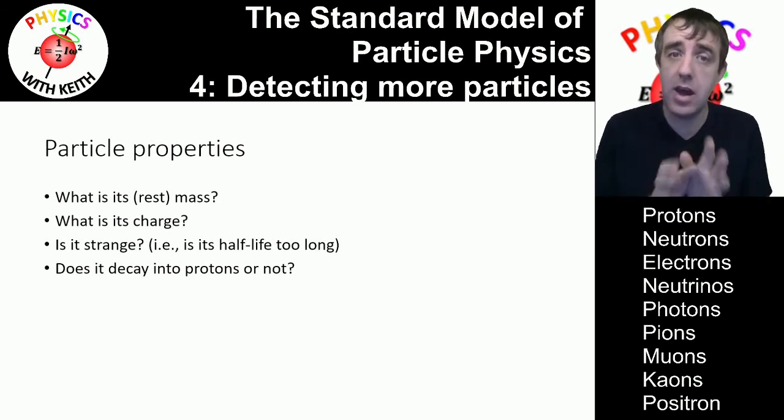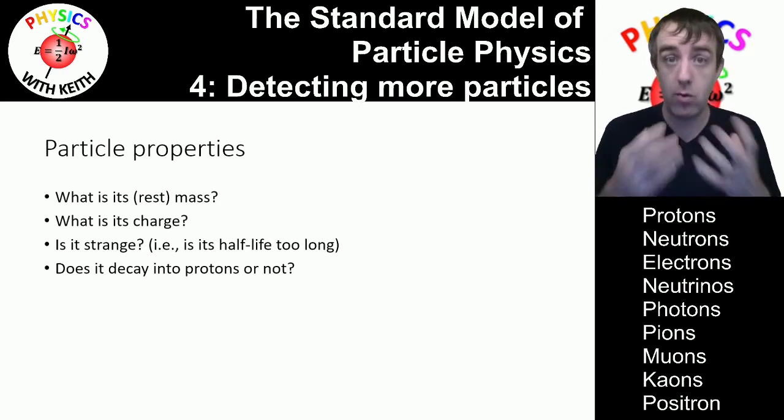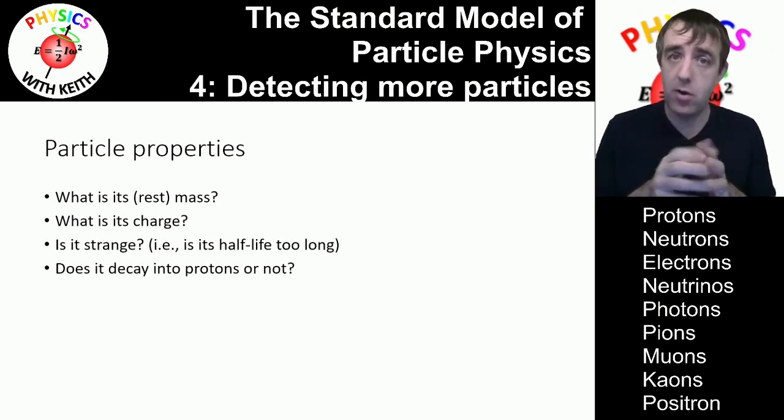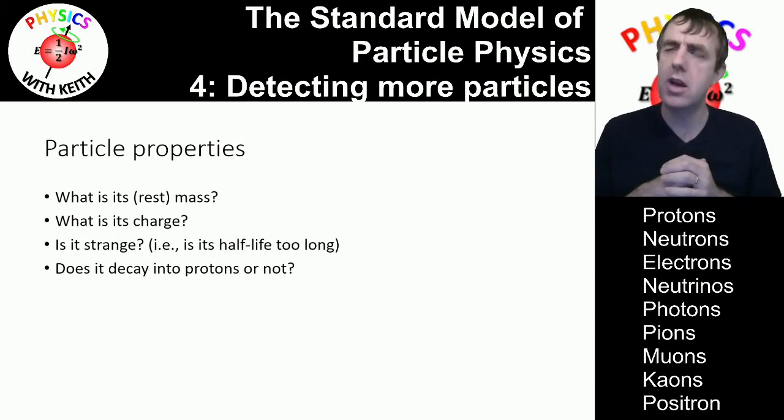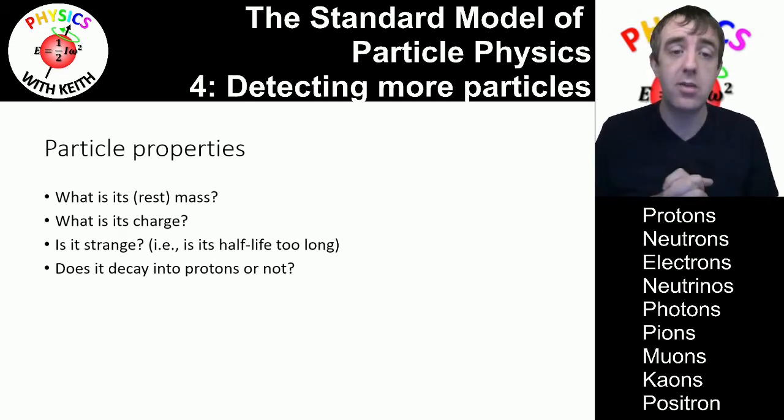And lastly by looking at how those particles decay we can decide whether the proton lies in the decay chain or not. So for muons they never decay into protons they end up decaying into electrons. But for pions they'll never decay into protons either. But for neutrons they will decay into protons.